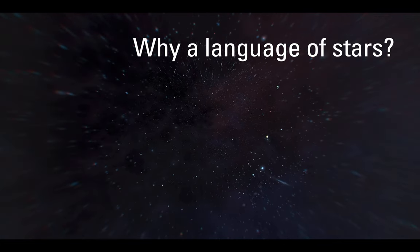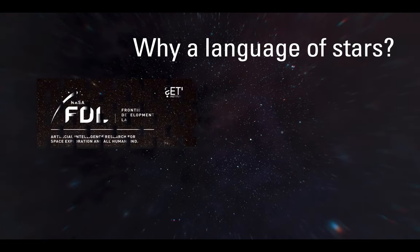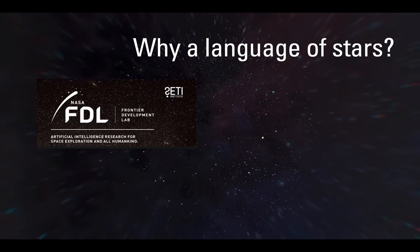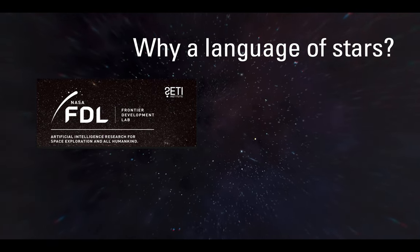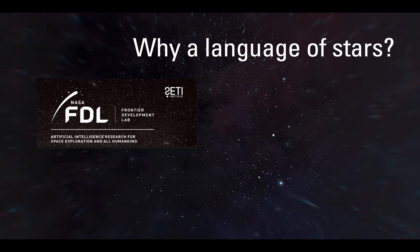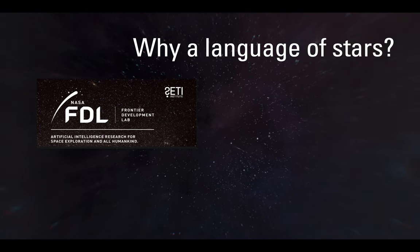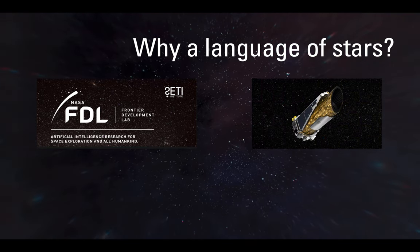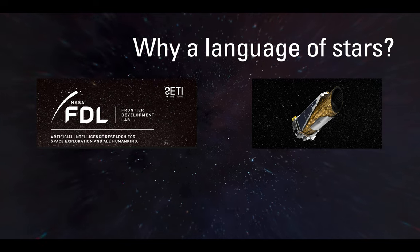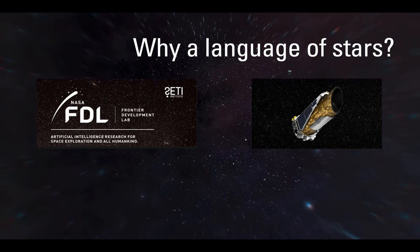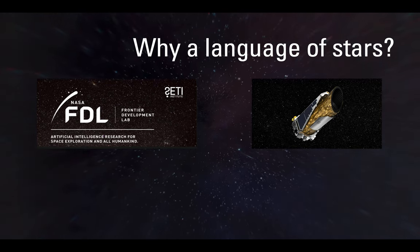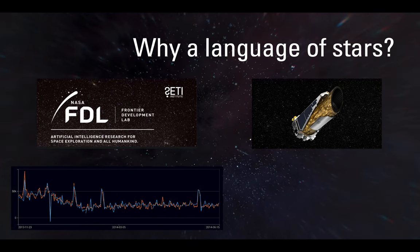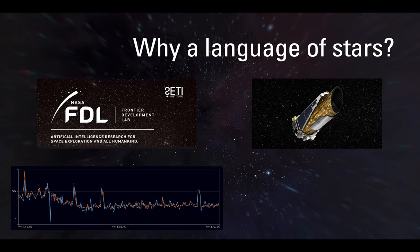NASA Frontier Development Lab, or FDL, is a research accelerator that brings together data scientists and space scientists to solve some of the most difficult space and planetary problems using AI. This project is a spin-off of one of the main challenges that identified star spots in Kepler data, but in this spin-off project we are looking at applications of specific AI techniques such as natural language processing to time series, specifically light curves, in order to identify both unique features and patterns in time series in general and in light curves in particular.